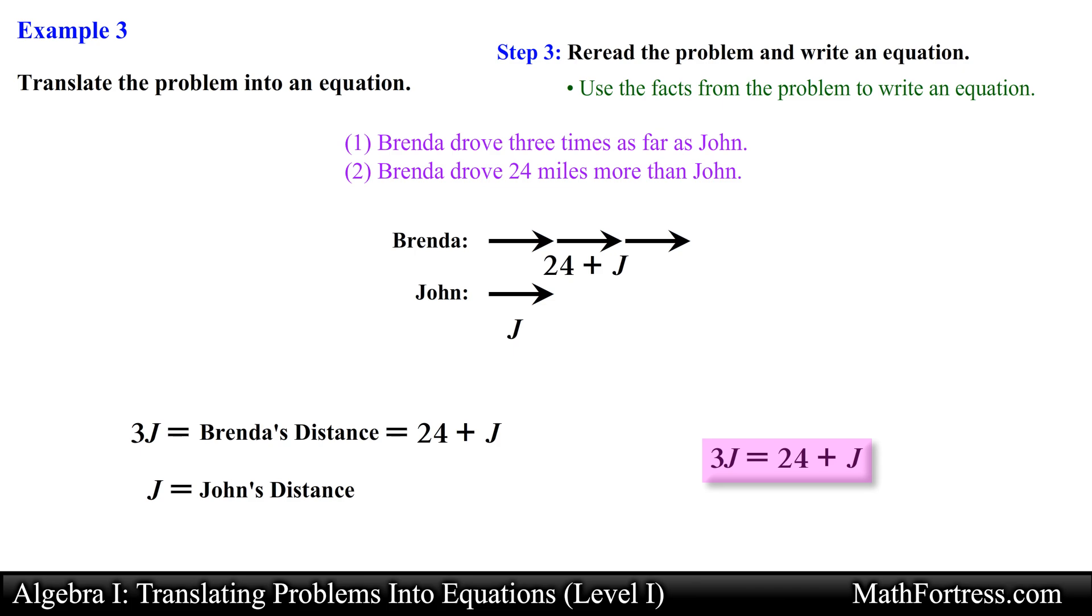And this is our final equation. In this example we had two sentences that related a single unknown quantity with the other unknown quantity in two distinct ways. Since both sentences relate the same unknowns it is natural that both expressions are equivalent to each other. So you go ahead and set them equal to one another. Alright, in our next video we will continue going over more challenging word problems.